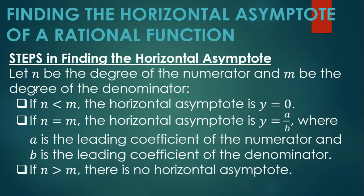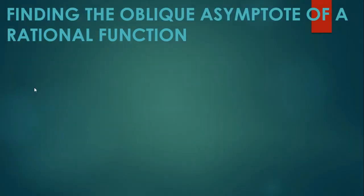If n is greater than m — kapag mas malaki daw yung exponent ng numerator kesa kay denominator — then there is no horizontal asymptote. Bear this in mind. The last type of asymptote is the oblique asymptote.